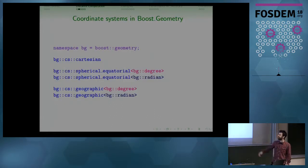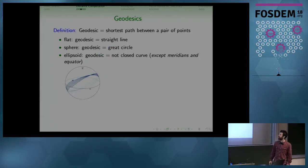These systems in Boost Geometry, we have types for them. They are quite simple types. So it's one for Cartesian, one for the sphere, and one for the ellipsoid.